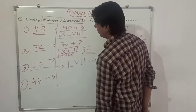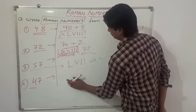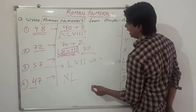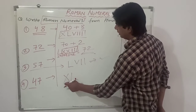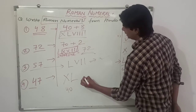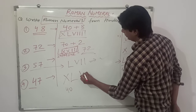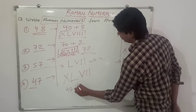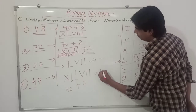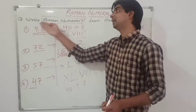Next we have to write 47. We know L means 50. If we write X to the left-hand side, 10 gets subtracted, so it becomes 40, written as XL. Then we write 7 as VII. So 40 plus 7 equals 47, written as XLVII.